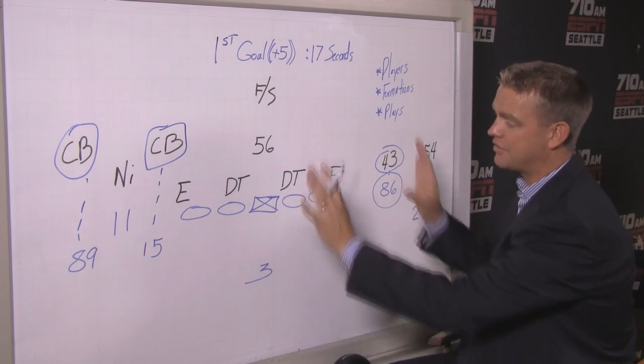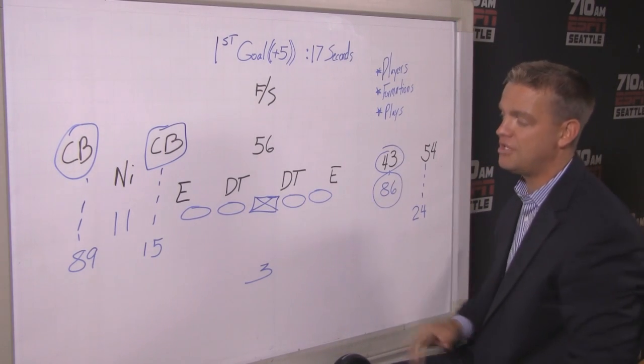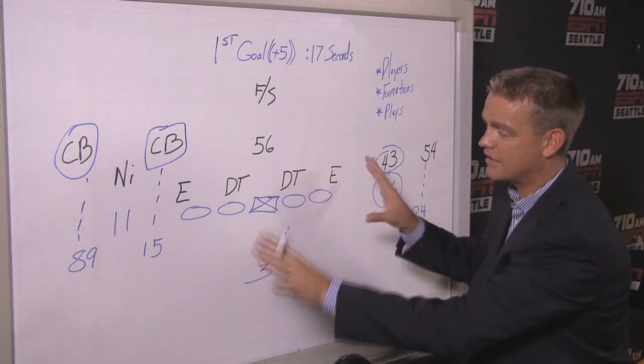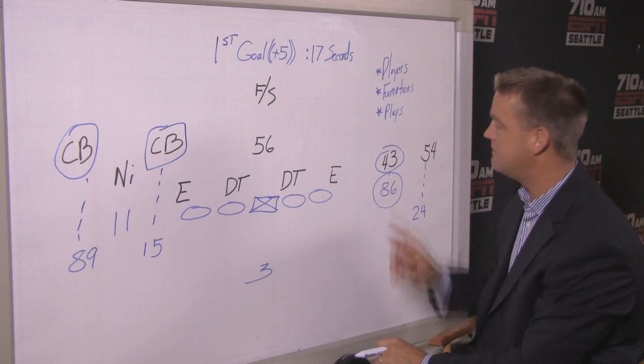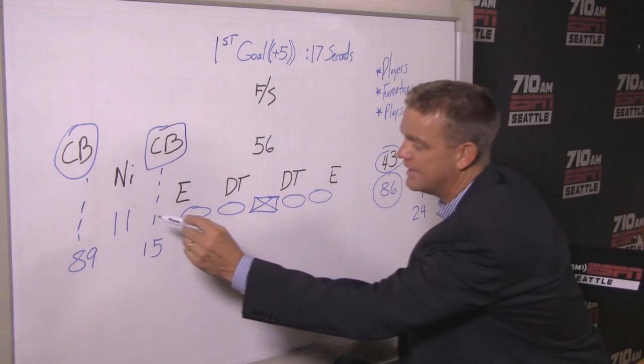So by personnel group, you get the grouping defensively you want. Von Miller, DeMarcus Ware. By formation, you get a good tell for your quarterback that they're playing man coverage. And then ultimately, they run the play. And it's a play that they've run a ton, just with different people doing it.